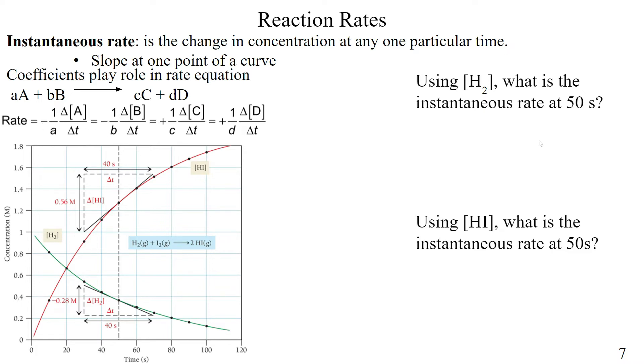Now let's look at our question using H2. What is the instantaneous rate at 50 seconds? If we're trying to find a rate at 50 seconds, we're still going to do the same thing: change in concentration over change in time. In this case, we need to really focus on our points. For the 50 second point,